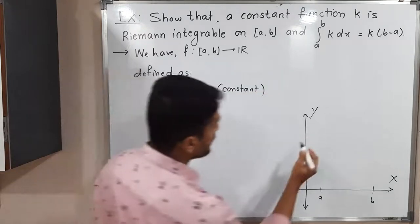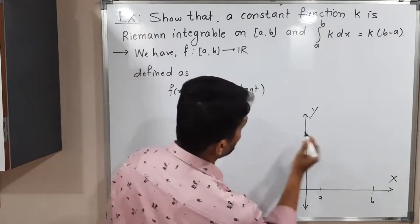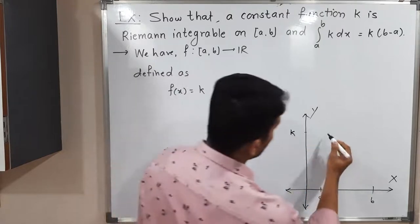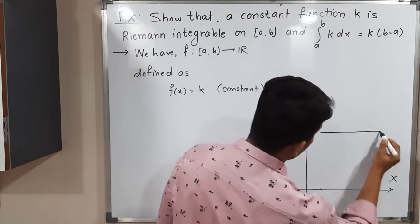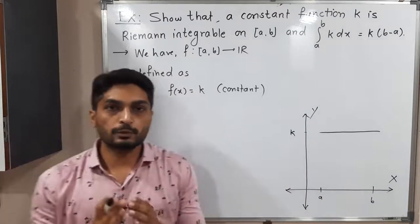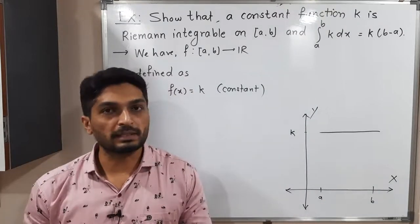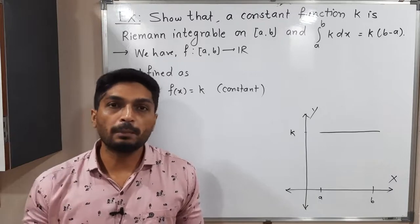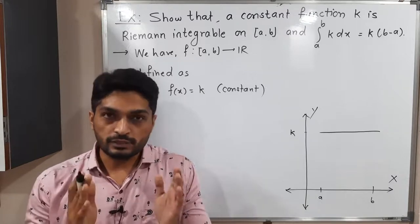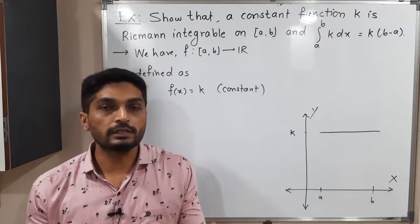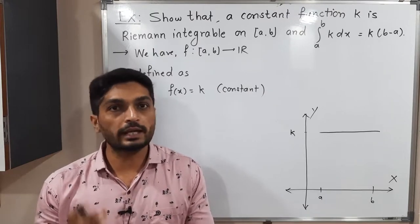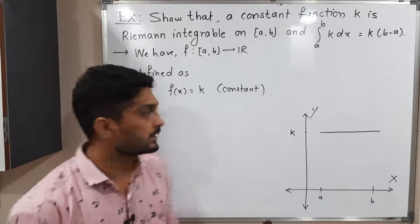Let me draw the graph of that function. k is a constant, so the graph is a horizontal line defined on closed interval [a, b]. We have to prove that this function is Riemann integrable, meaning we have to prove the upper integral equals the lower integral. Let us find their values first, and then we will say both of them are equal. First of all, we will take one partition of closed interval [a, b].